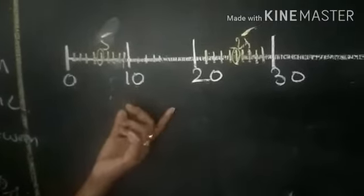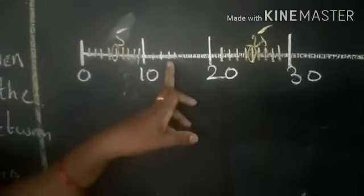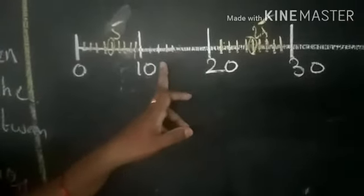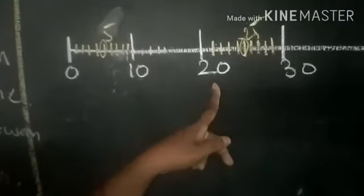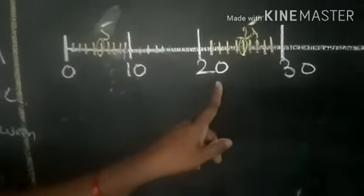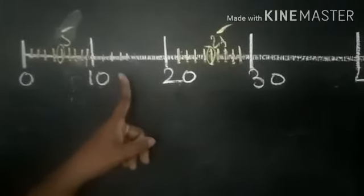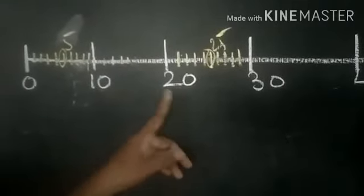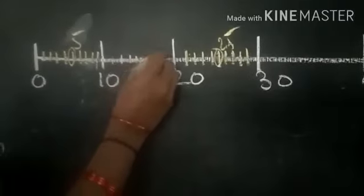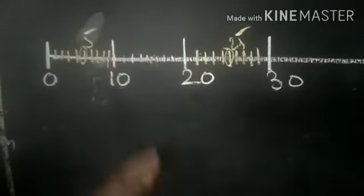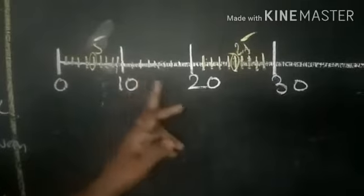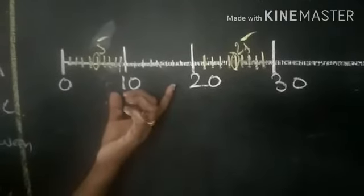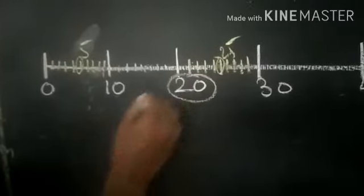Now children, if a number is between 15 and 20, then it is closer to 20 children. What are the numbers between 15 and 20? 16, 17, 18, 19 are in between 15 and 20. So all these numbers are closer to 20 children.